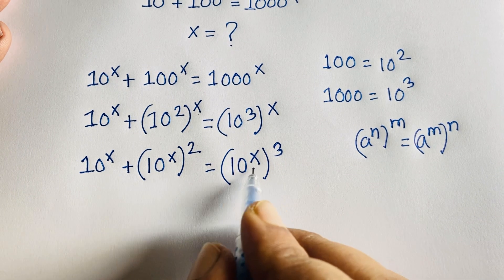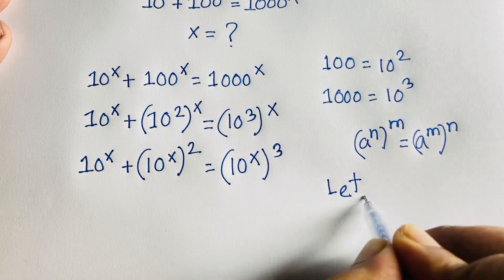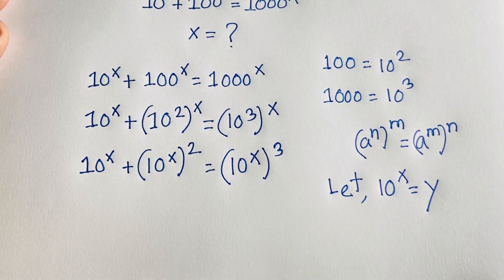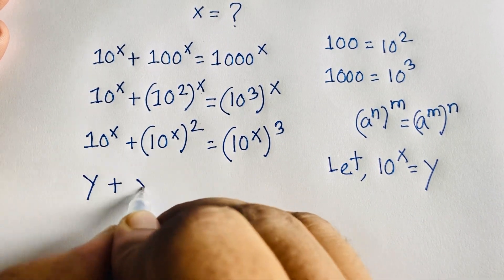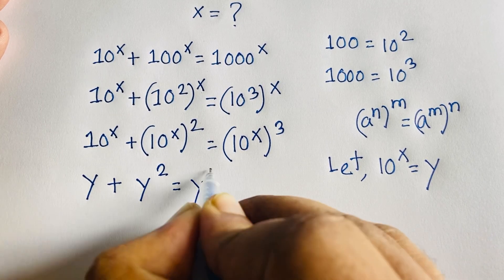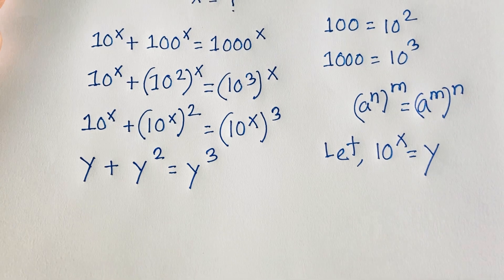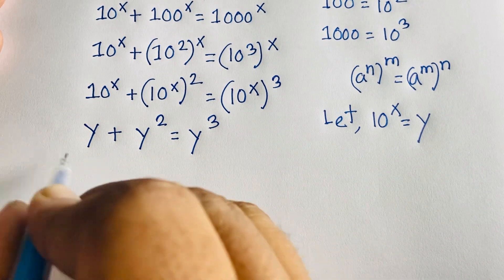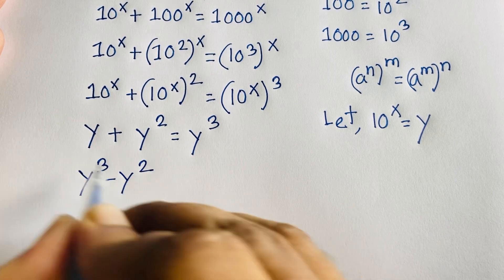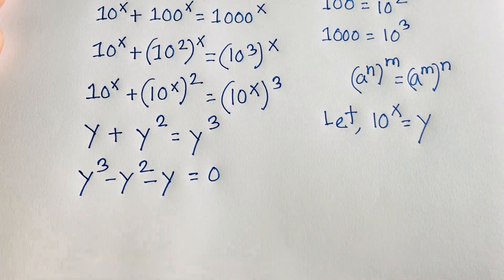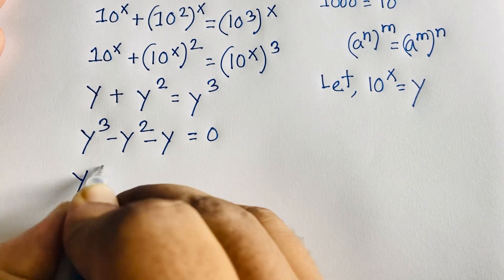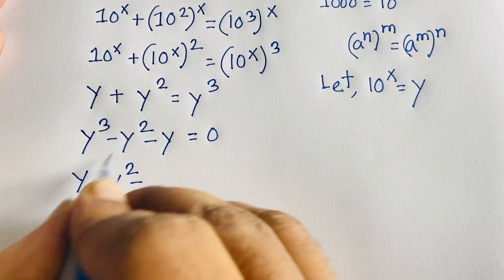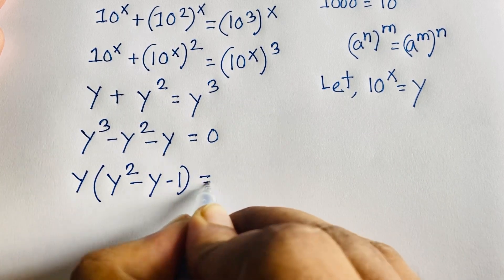Now we notice that 10^x appears in every term. Let y equal 10^x. So the equation becomes: y plus y² equals y³. Rearranging, we get y³ minus y² minus y equals 0. Factoring out y, we get y times (y² minus y minus 1) equals 0.